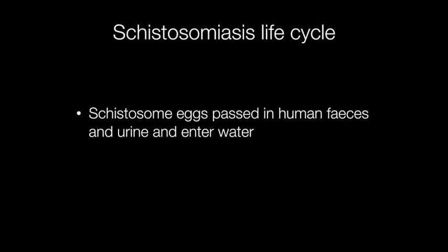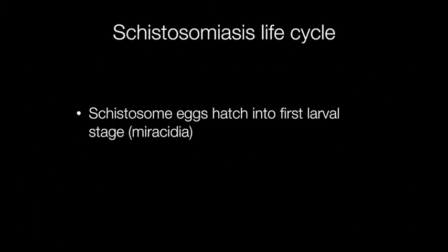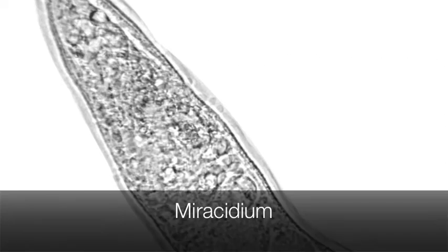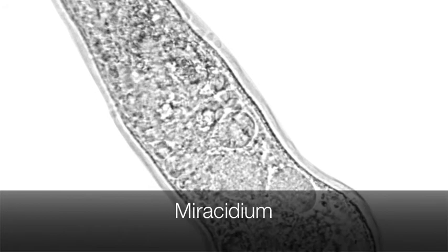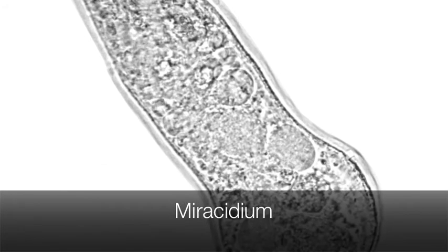The Schistosome life cycle really begins when the eggs are passed in human faeces or urine into the water. The Schistosome eggs then hatch into the first larval stage or miracidia. Here is a picture of a miracidium — that's a Schistosome larva.